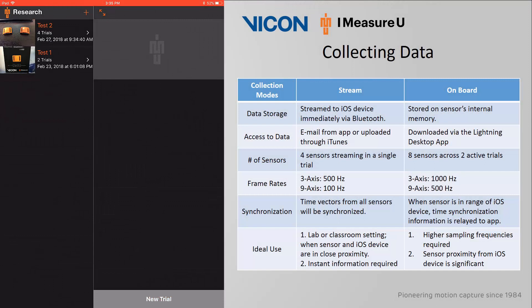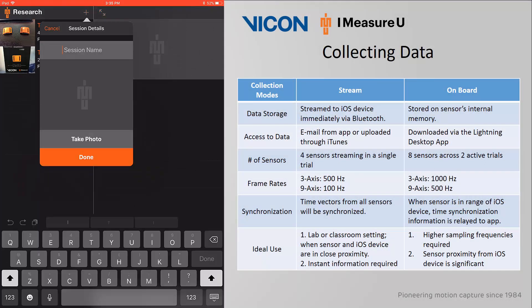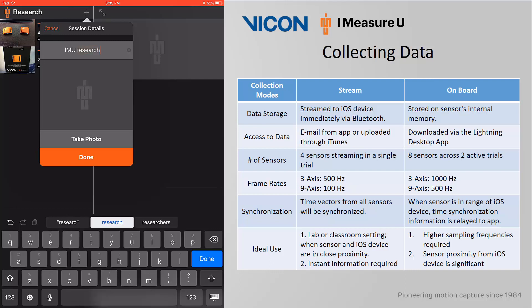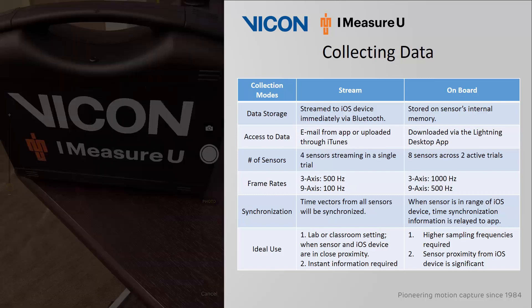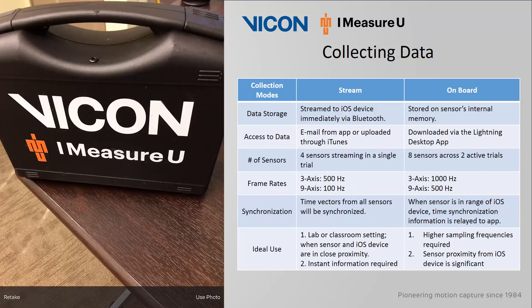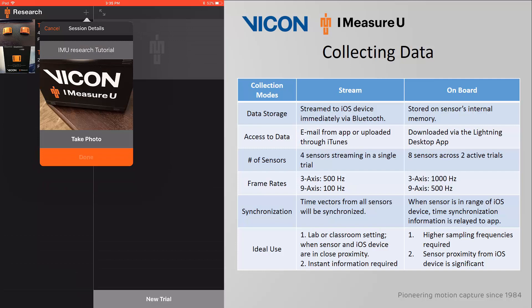To start collecting data, you must make sure to have a session. To create a new session, click on the plus icon at the top. You will be prompted to enter a session name — I will type in IMU Research Tutorial. You also have the option to take a photo using your device's camera so that you can easily identify your session within the list on the left. When satisfied, click Use Photo and then click Done.